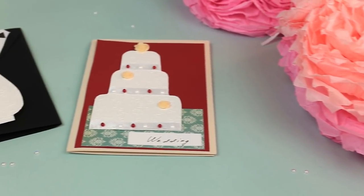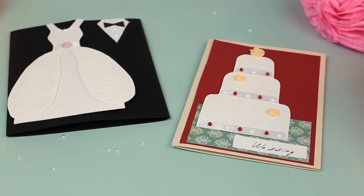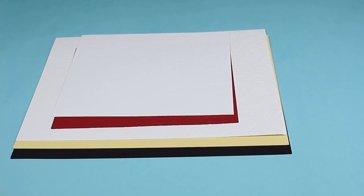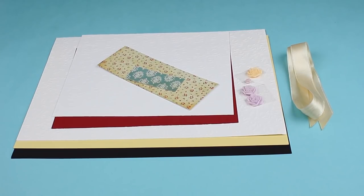In this video, we'll show two awesome wedding scrapbook ideas. We'll need colored cardstock, ribbons, patterned paper, and embellishments.